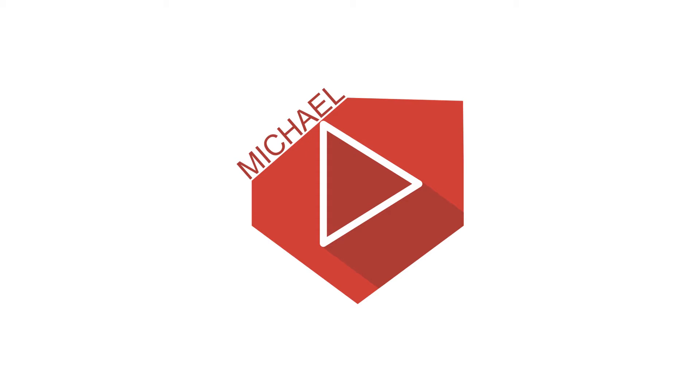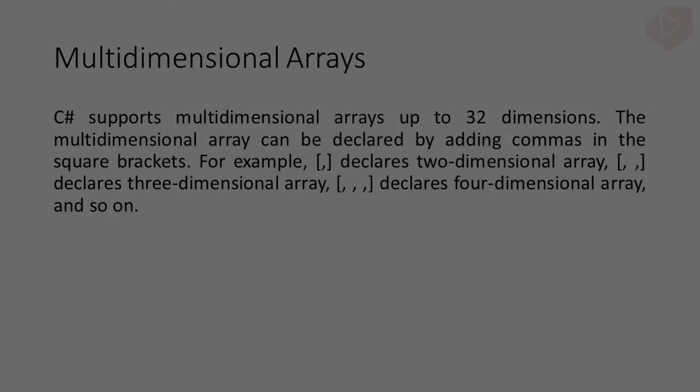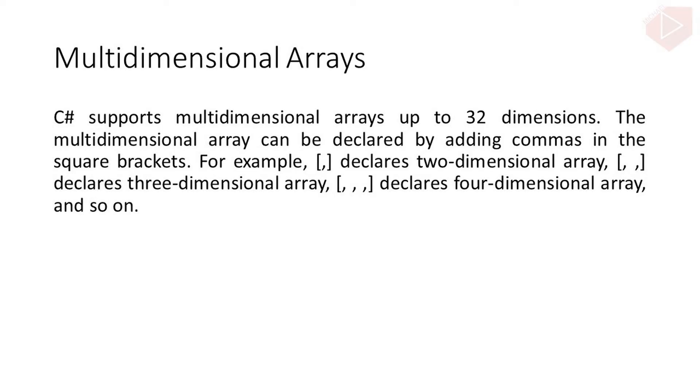Good day everyone, I'm Michael and I'm using a text-to-speech program to have a more clear speech and audio. C# supports multidimensional arrays up to 32 dimensions. The multidimensional array can be declared by adding commas in the square brackets.